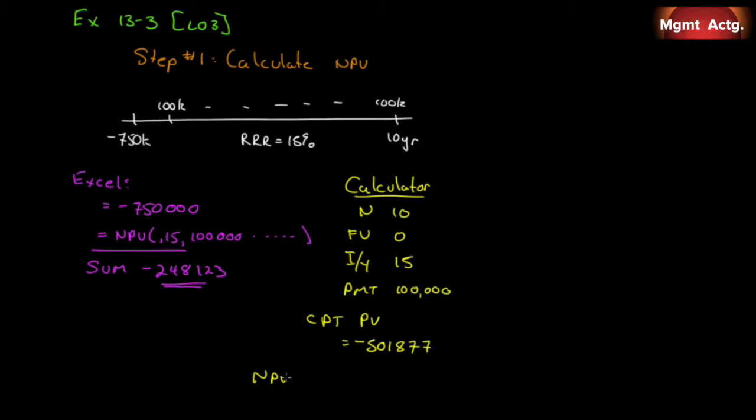So that my net present value would be $501,877 minus the $750,000 that I'm paying. What will I get here? Lo and behold, negative $248,123, which is what we get with Excel.